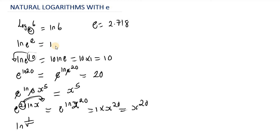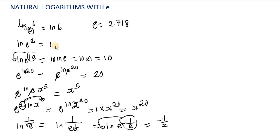Let's evaluate ln of 1 divided by the square root of E. The square root of E is E raised to the power of 1 over 2, so we can write this as ln of 1 over E raised to the power of 2. Taking the reciprocal, this is E raised to the power of negative 1 over 2. We move negative 1 over 2 to the front: negative 1 over 2 multiplied by ln of E. Since ln of E equals 1, the answer is negative 1 over 2.